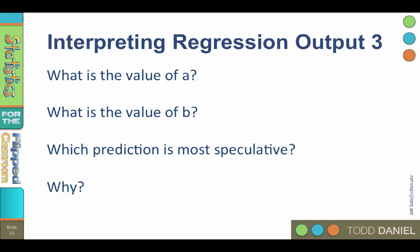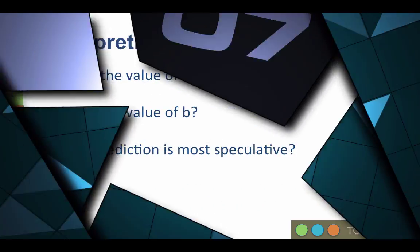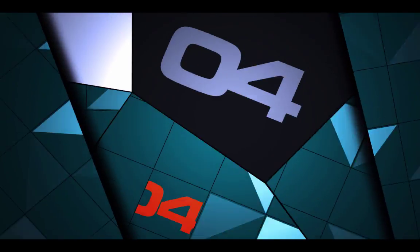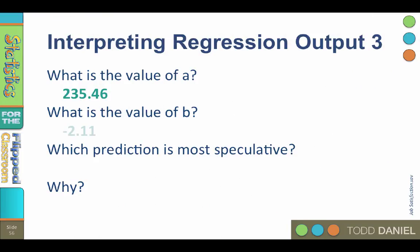What is the value of A? 235.46. What is the value of B? Negative 2.11.